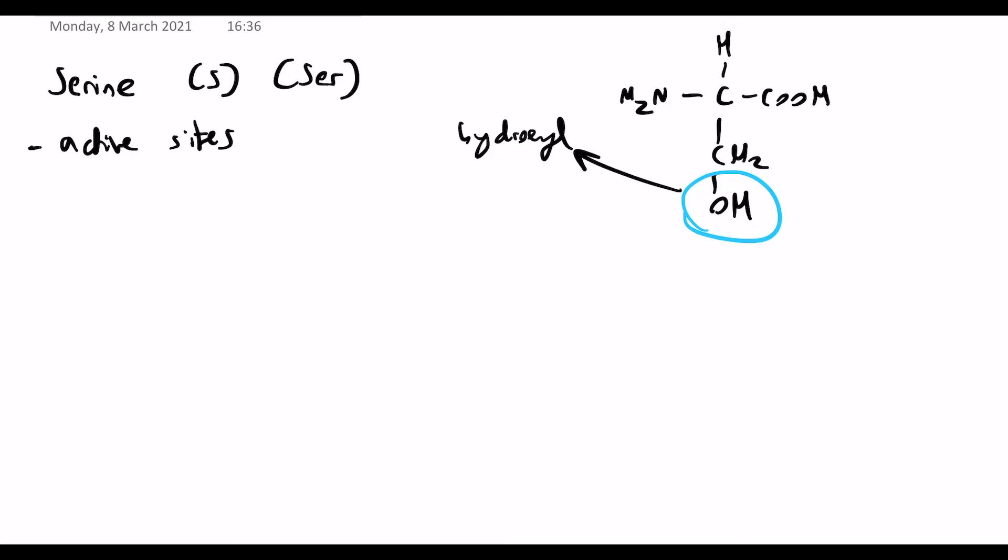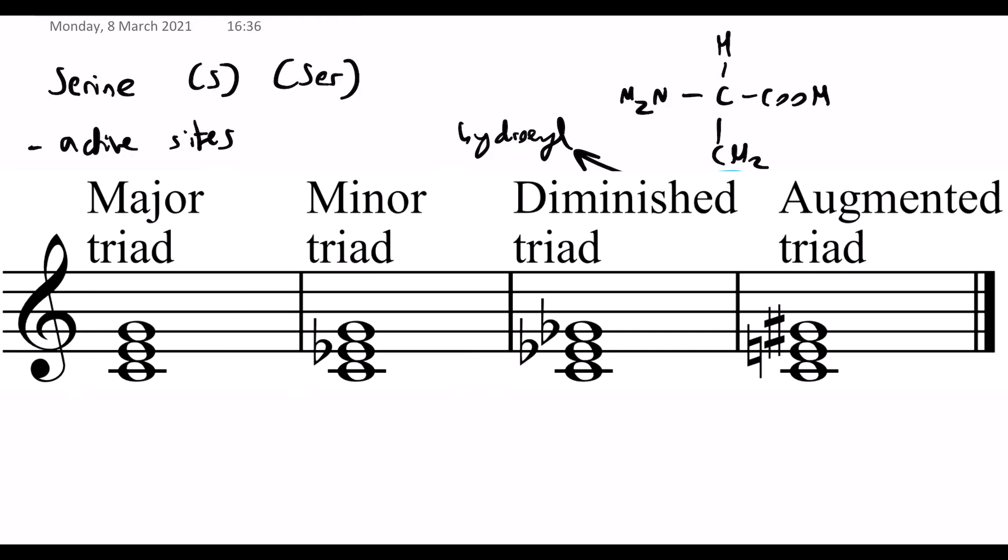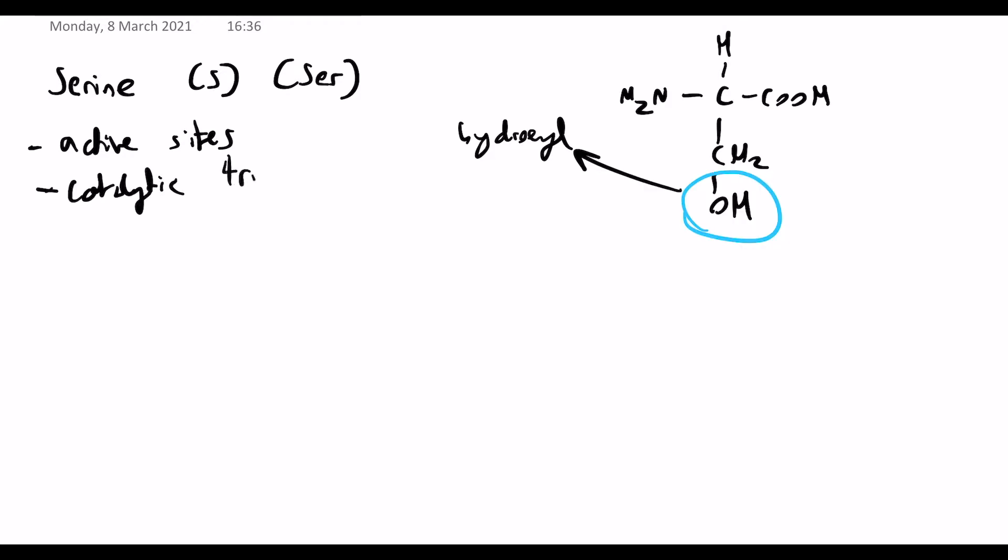And the way it functions in them is usually as part of something called a catalytic triad. So the catalytic triad is basically three amino acids, one of which behaves as a nucleophile, the other behaves as an acid, and then the last one behaves as a base.